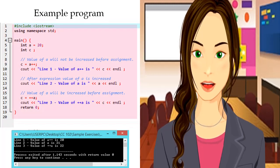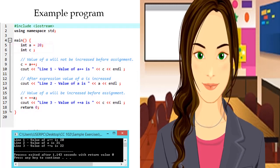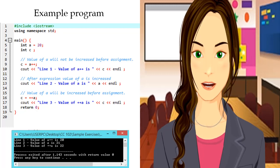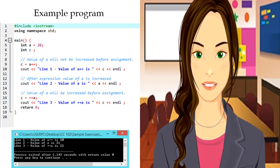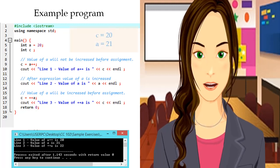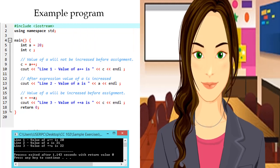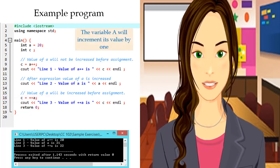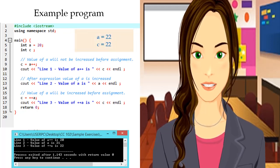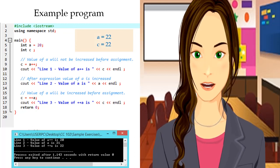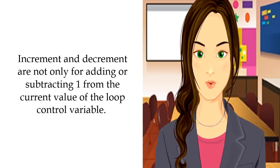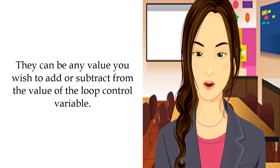In this sample program, there are two variables — variable a with an initial value of 20, and variable c. In line 9, c = a++ — the value of a (which is 20) will be assigned to variable c before incrementing by 1. Since this uses a postfix increment, a increments after assigning, so c is 20 and a is 21. In line 16, ++a (prefix increment) — variable a increments its value by 1 first, so the updated value of a is 22, and this value is then assigned to c. Thus the value of c becomes 22. Note: increment and decrement are not only for adding or subtracting 1 — they can be any value you wish to add or subtract from the loop control variable.